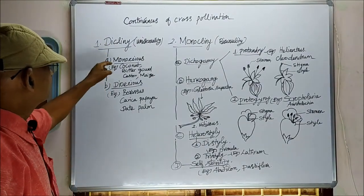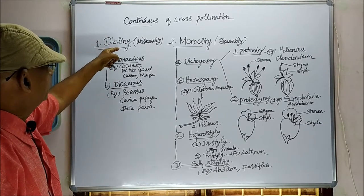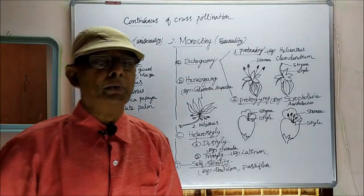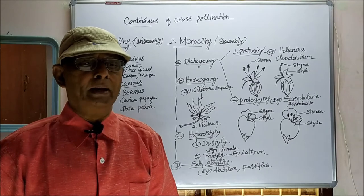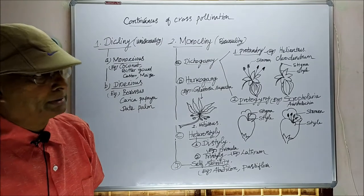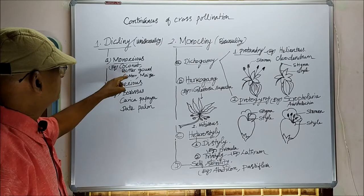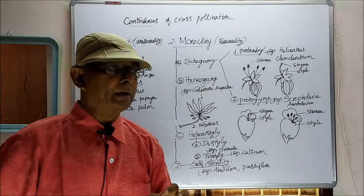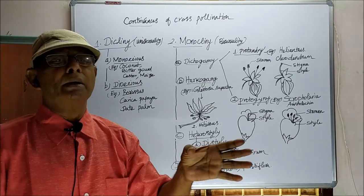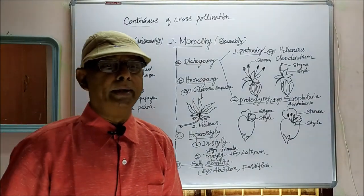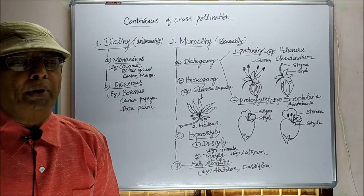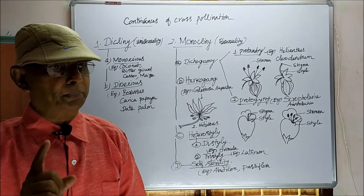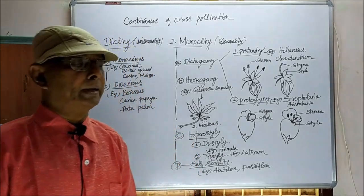Plants which produce unisexual flowers come under dicliney. Dicliney, otherwise called unisexuality, is further subdivided into monoecious and dioecious. What is monoecious? When a plant produces both male and female flowers on the same plant, that condition is called monoecious. Coconut, bitter gourd, castor, and maize are examples. In these plants, both male and female flowers are produced separately on separate branches. In monoecious condition, autogamy is completely prevented, but geitonogamy takes place. When pollination takes place between two different flowers of the same plant, that is called geitonogamy.